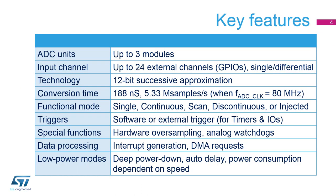Up to three analog-to-digital converters are integrated inside STM32L4-X6 products. The input channel is connected to up to 24 GPIO channels capable of converting signals in either single-end or differential mode. The ADCs can convert signals in excess of five megasamples per second. There are several functional modes, which will be explained later.